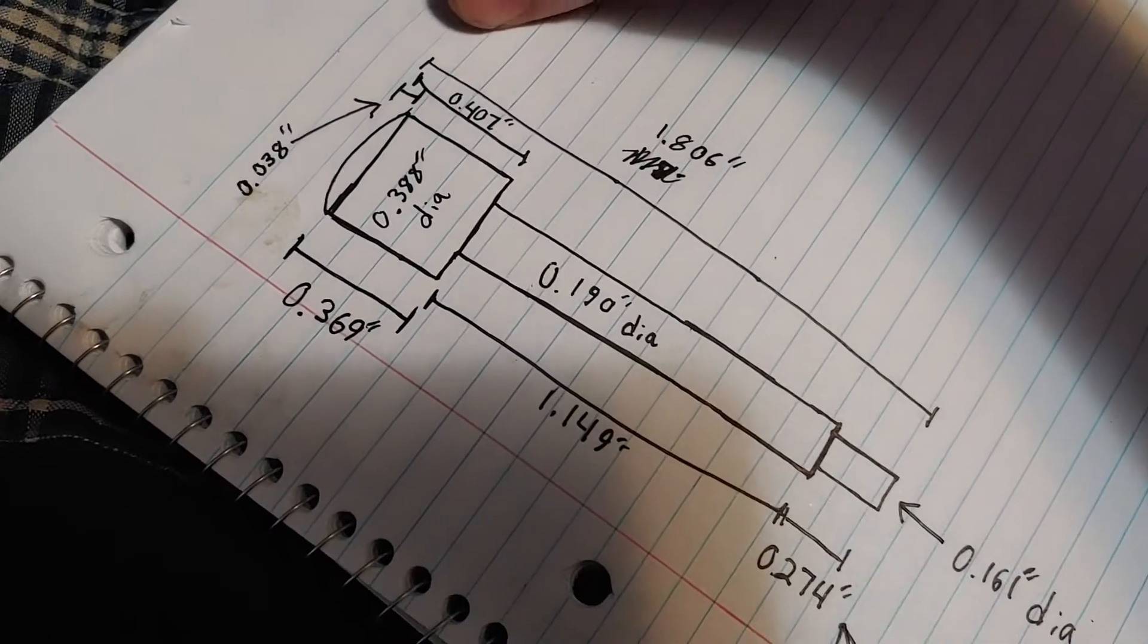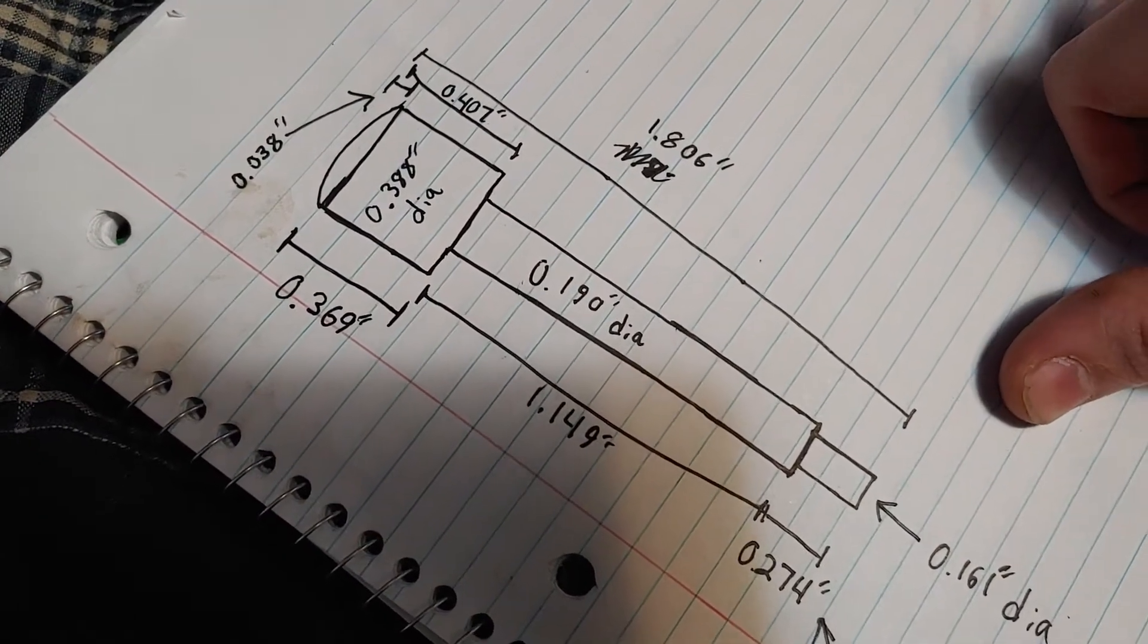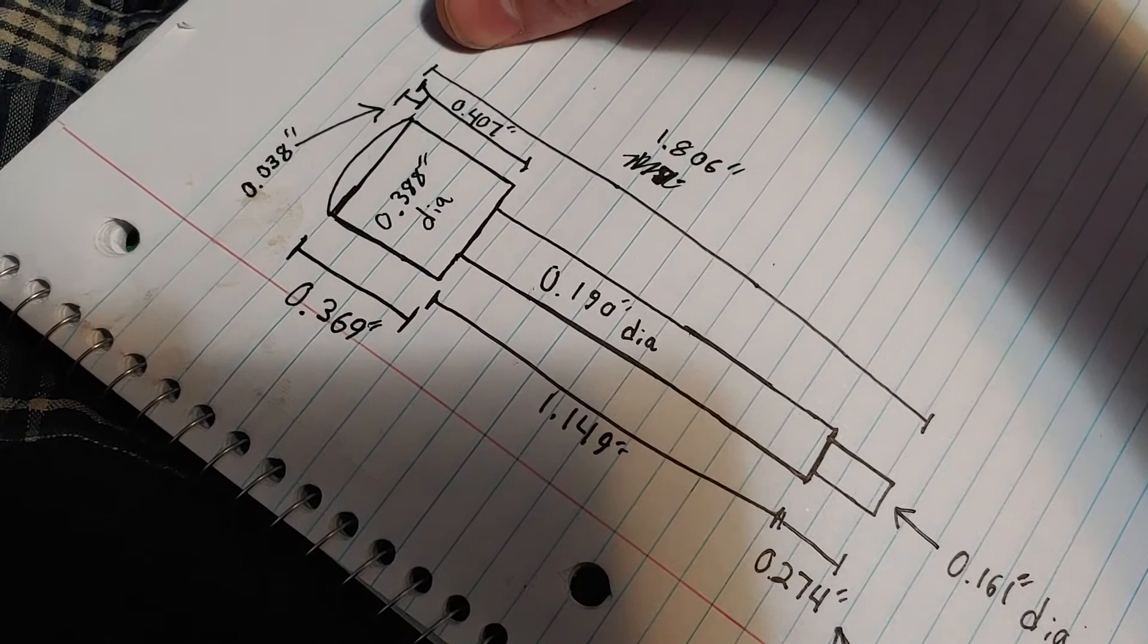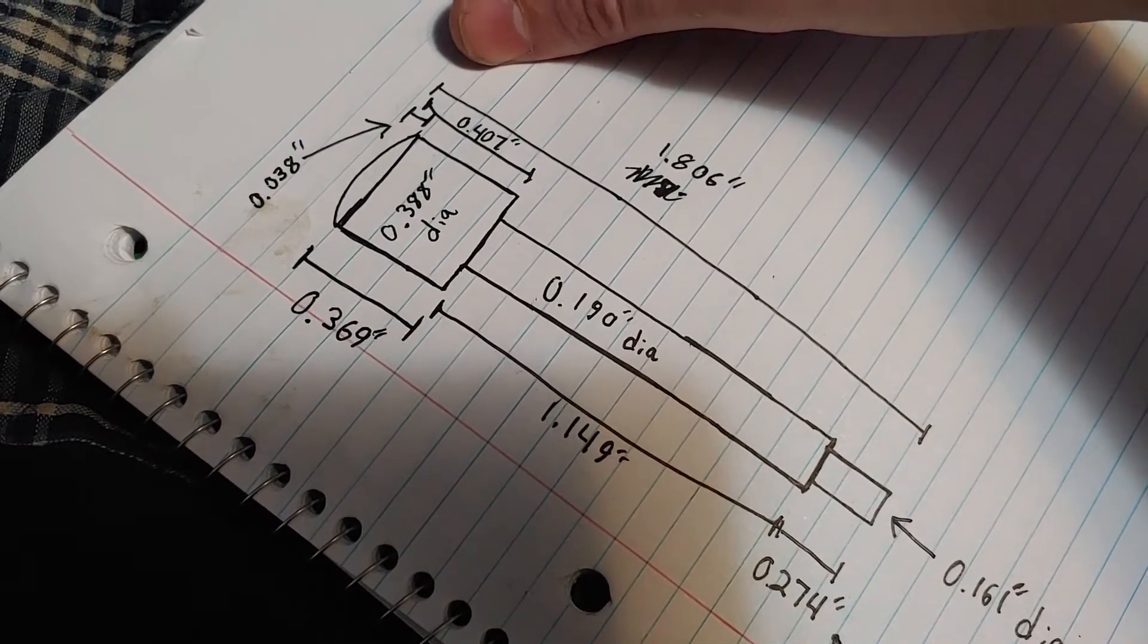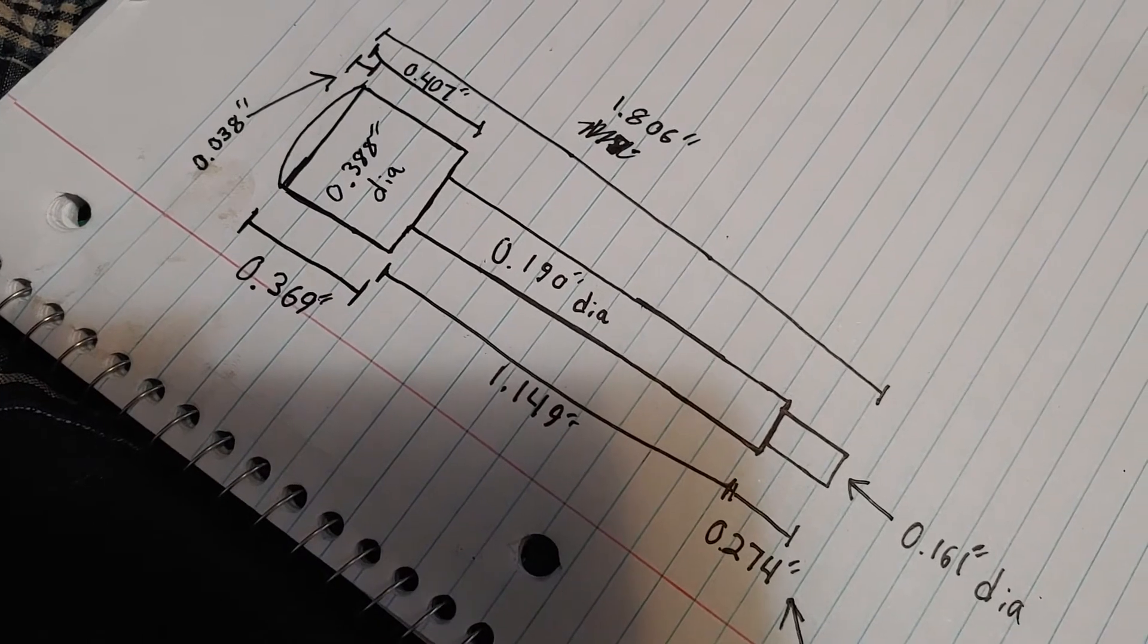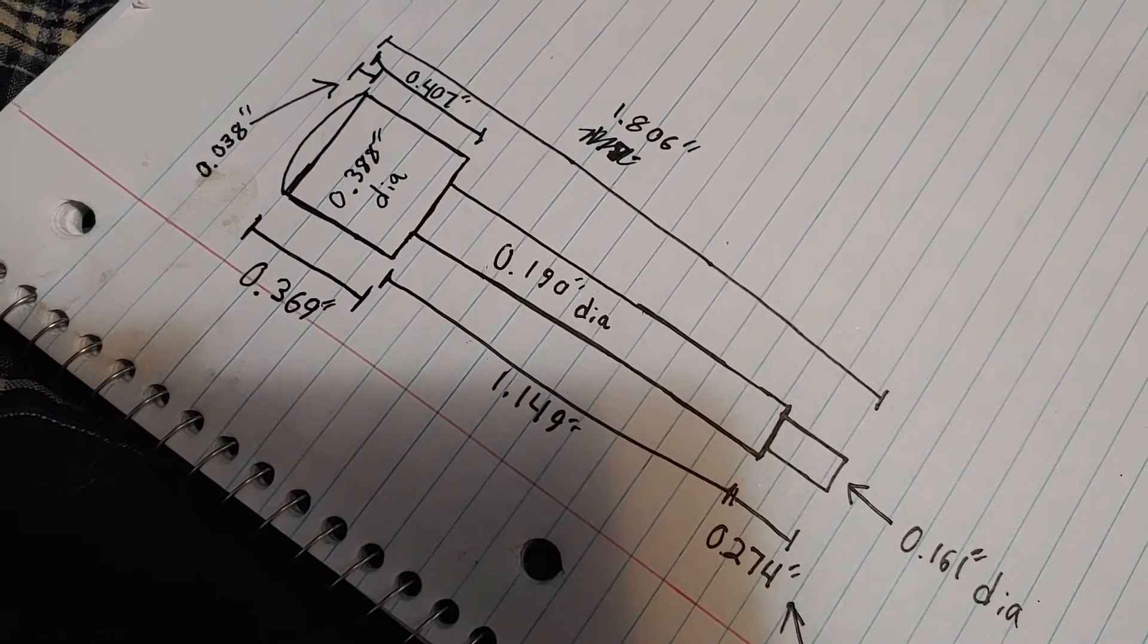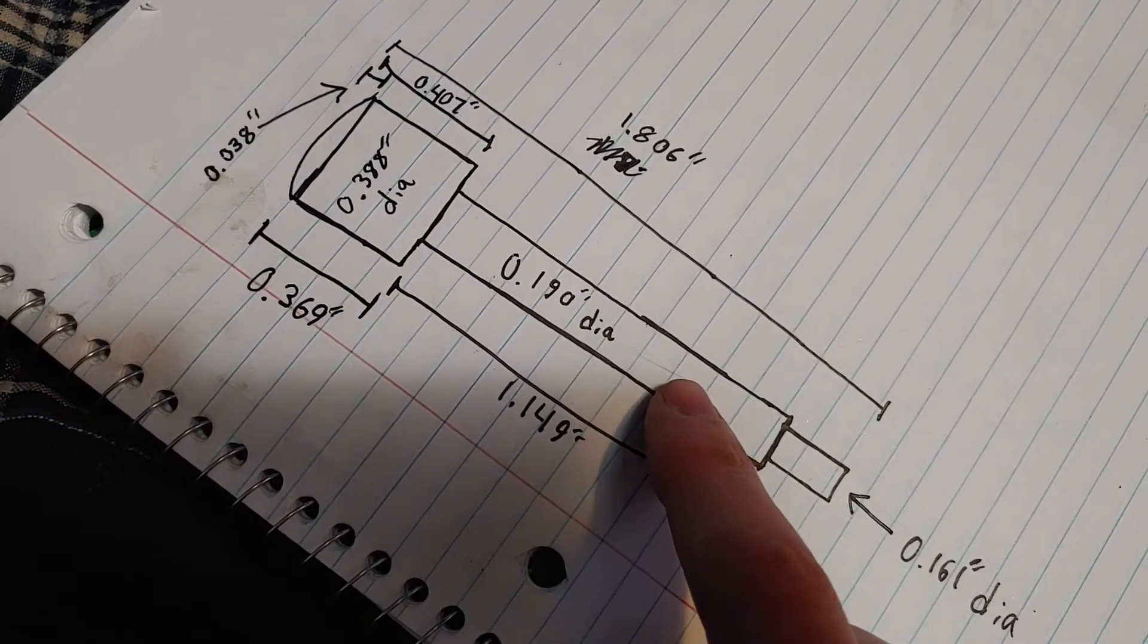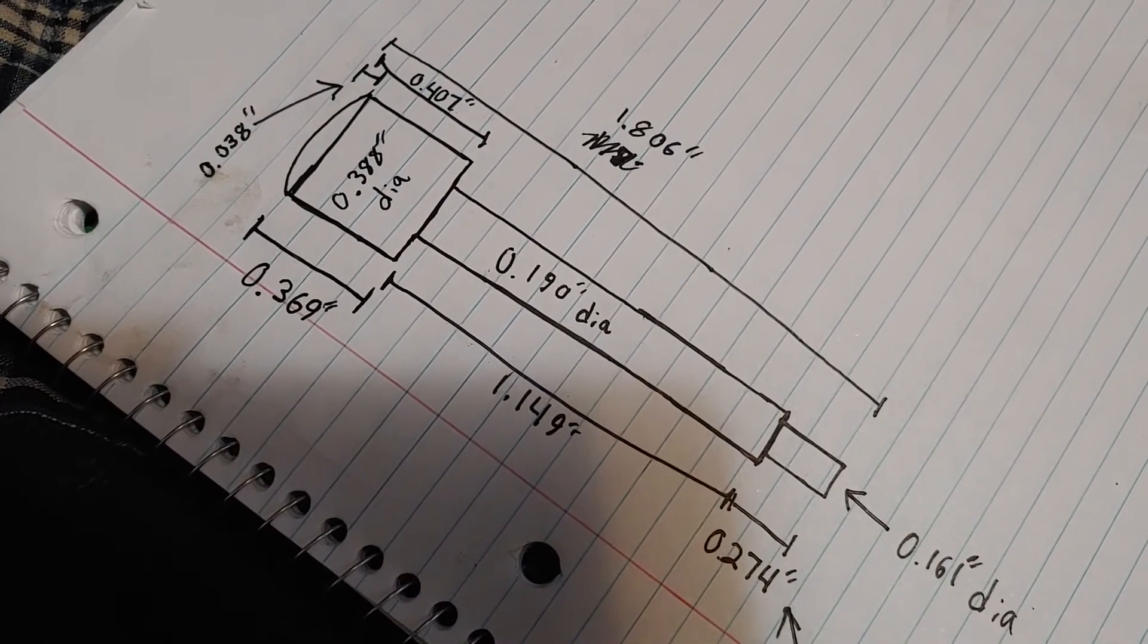The total length of the pin, if not welding, caveat, is 1.806 inches. This section of the pin is 1.149 inches. The diameter of this is 0.190 inches.